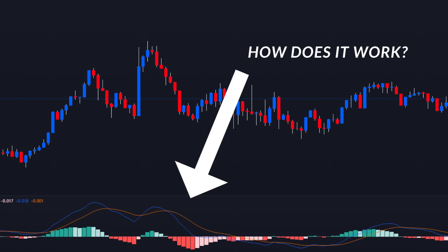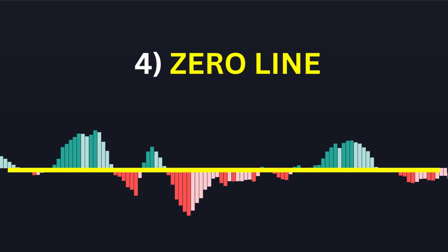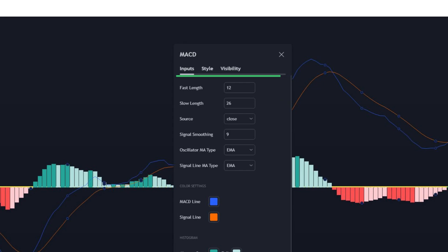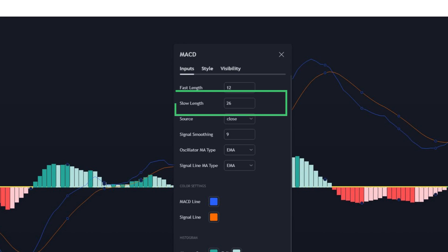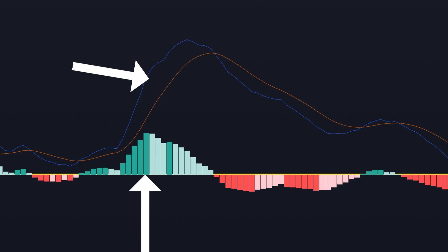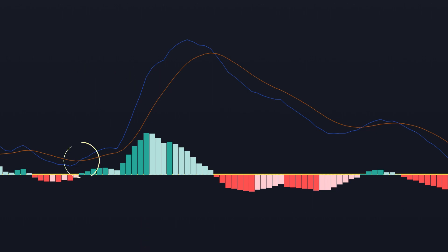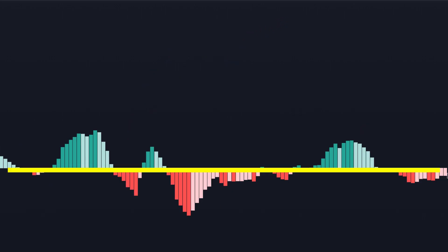Now that we have the MACD, let's make sure we know how it actually works. The MACD is made up of four different components: the MACD line, the signal line, the histogram, and the zero line. The MACD line, which is the blue line in most cases, is usually a 12-day moving average. The signal line, which is the orange line, is usually a 26-day moving average. Next, we have the histogram, which represents the difference between the MACD line and the signal line. The smaller the space between the two lines, the smaller the histogram gets; the bigger the space, the bigger it gets. Once the MACD line crosses above the signal line, the histogram turns green, and if the MACD line crosses below the signal line, it turns red. Finally, we have the zero line, which basically represents the center of the MACD indicator.